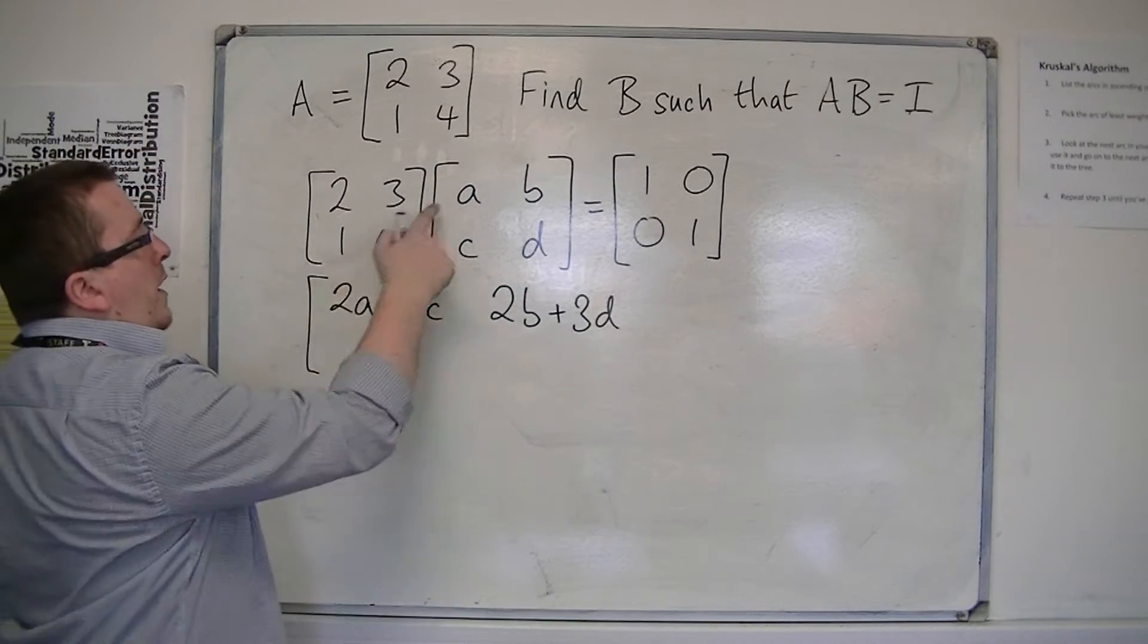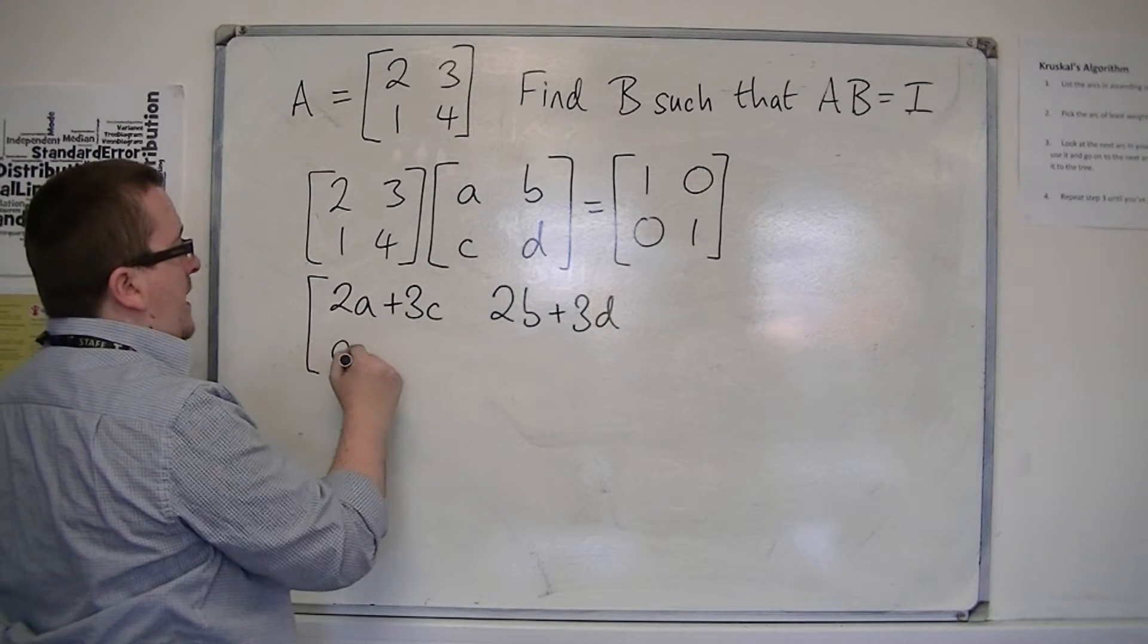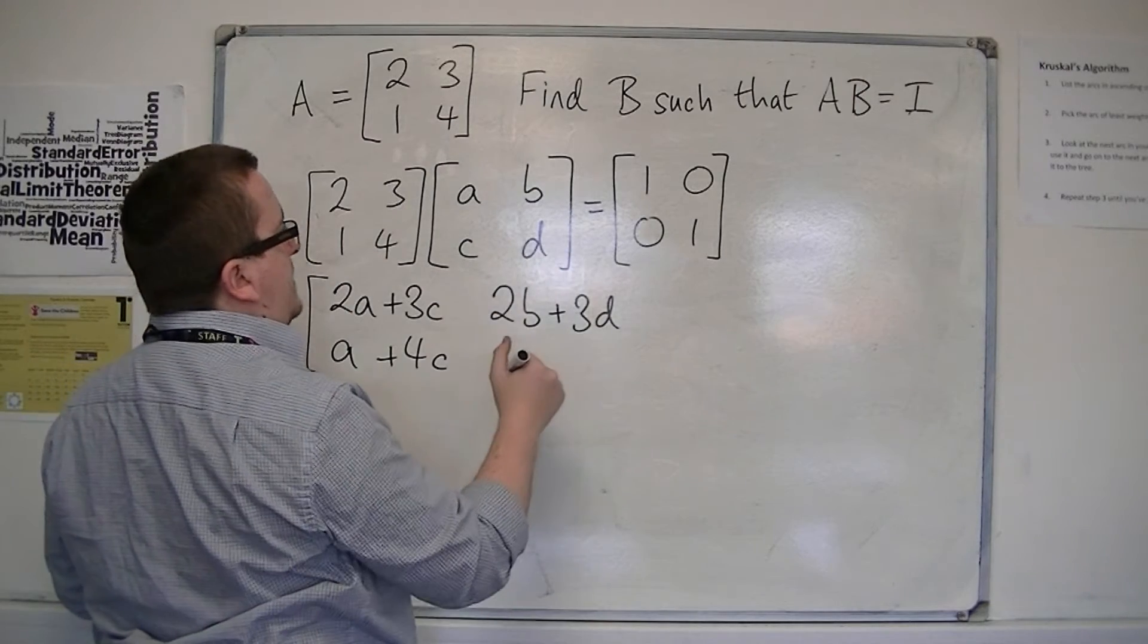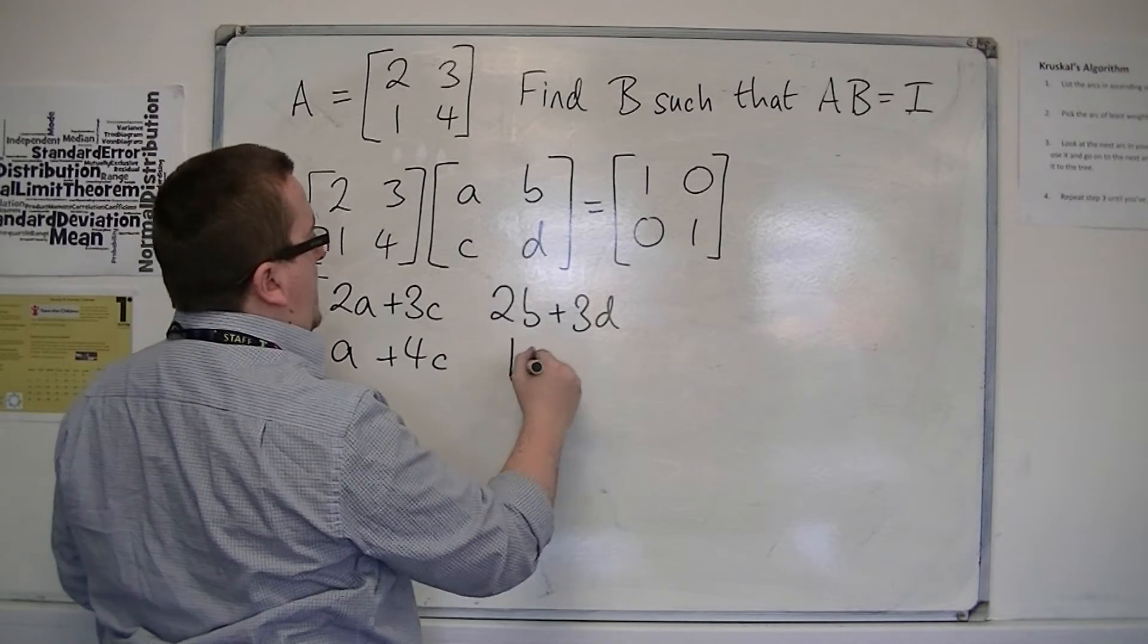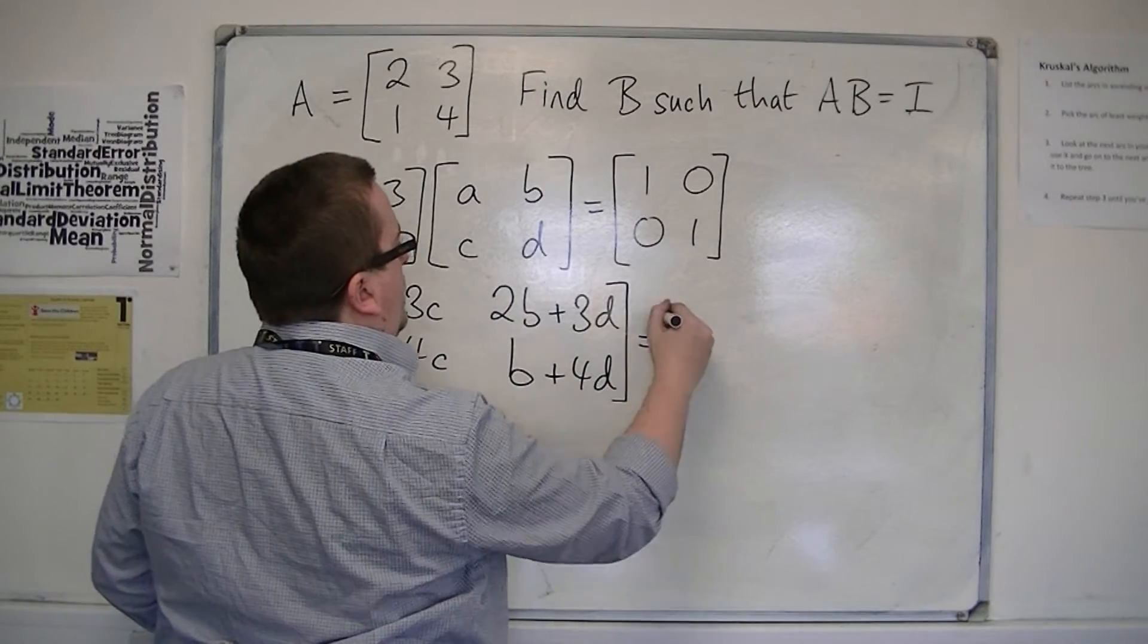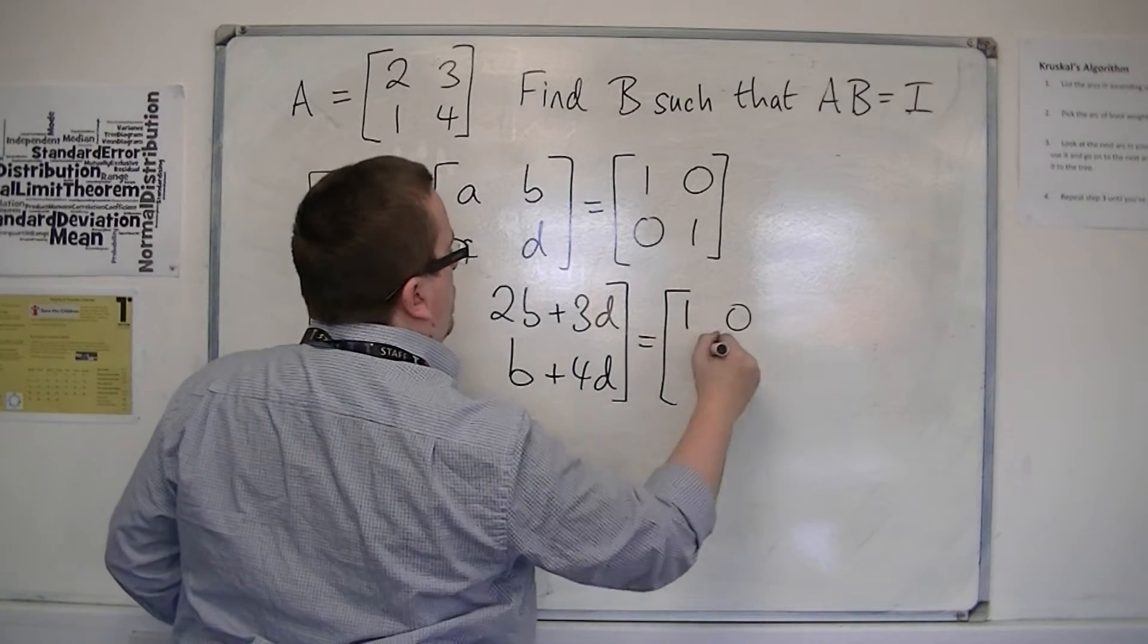I've got 1a and 4c, so a plus 4c. I've got 1b and 4d, so b plus 4d. And that's going to be equal to [1, 0; 0, 1].